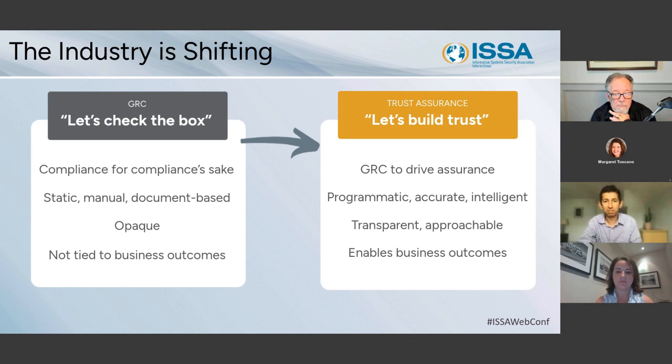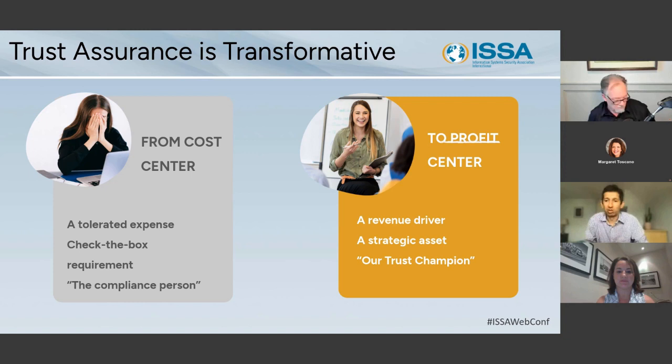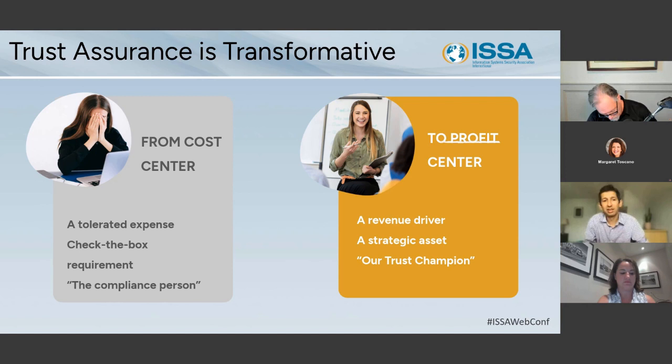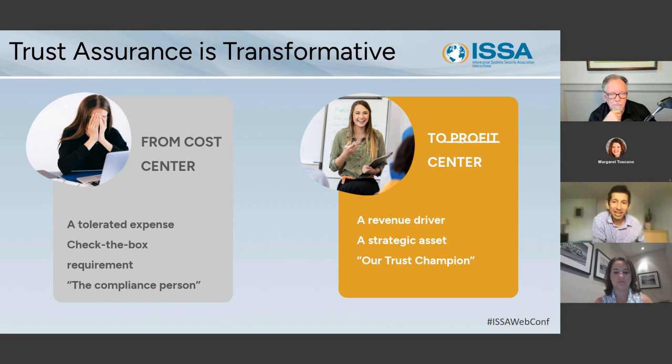A lot of the talk in the industry is about GRC automation. But I think automation, while it's important, just turns a check-the-box exercise into a faster check-the-box exercise. Trust assurance, on the other hand, takes the check-the-box exercise and makes it into a trust assurance, as well as a transparent posture that makes companies trust each other. The teams that are moving in the direction of establishing trust are turning their GRC programs from cost centers to profit centers — things looked at as a tolerated expense are now being seen as revenue drivers.